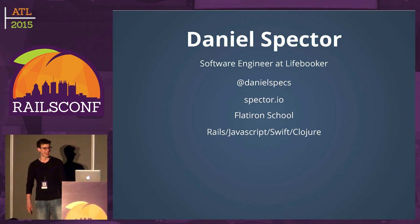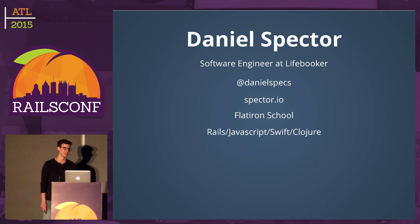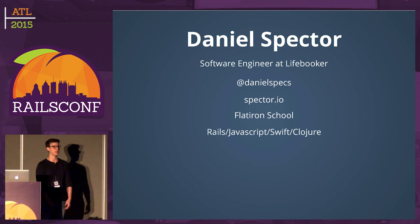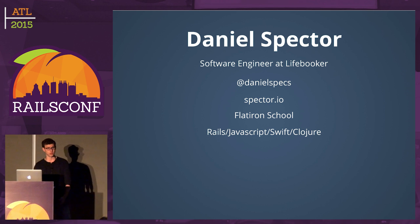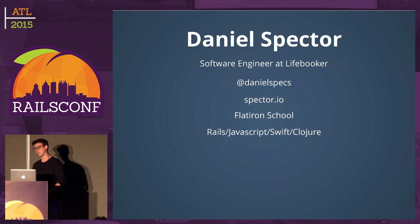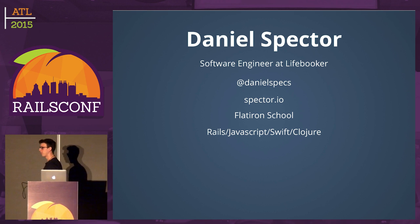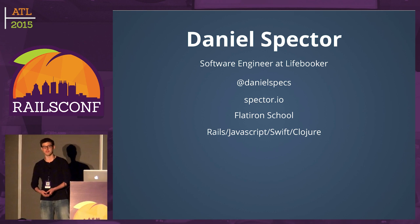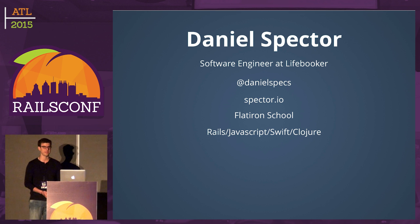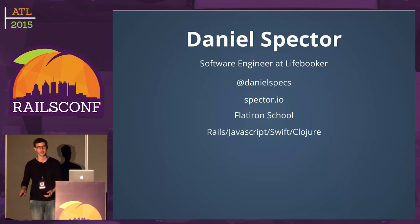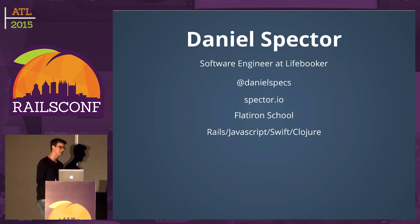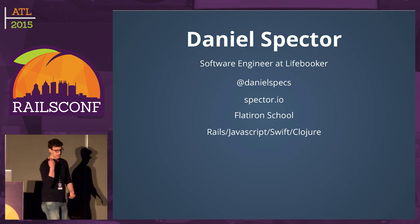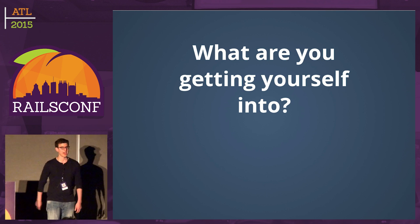A little about me: my name is Daniel Spector. I'm a software engineer at a company called Lifebooker in Brooklyn, a graduate of the Flatiron School. At Lifebooker we do Rails and JavaScript, primarily Ember. I was also involved in mobile development with some Swift experience, and we're recently moving over to Clojure.